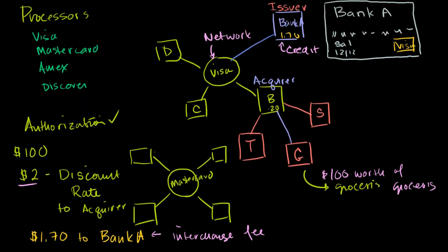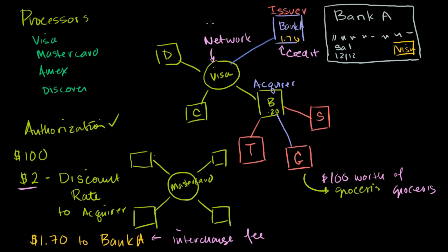So when the whole transaction gets settled, which essentially means everyone gets the money they need to get, this bank is going to send Visa's settlement bank $100 minus the $1.70 that it gets to keep as part of its interchange fee. So he's going to send Visa $98.30 to Visa. Visa will keep $0.10 of it, send it to the acquirer. So the acquirer is going to get $98.20. And then the acquirer is going to keep $0.20 for itself and give the retailer $98.